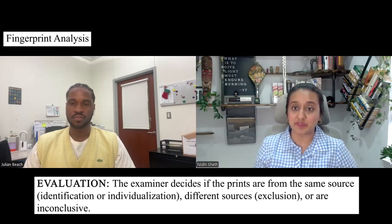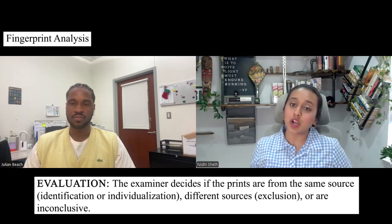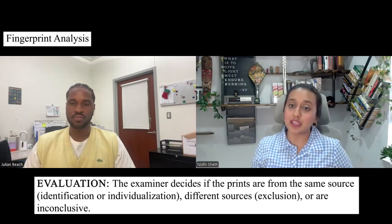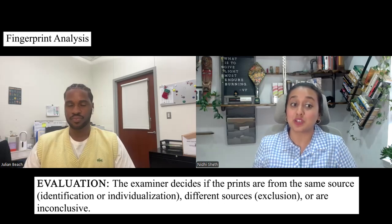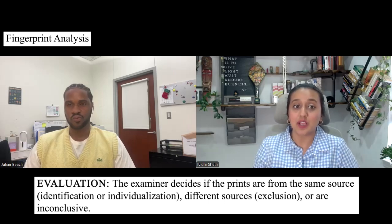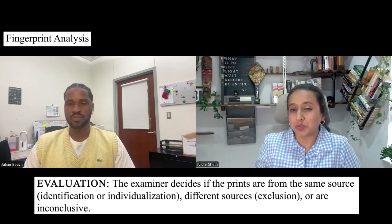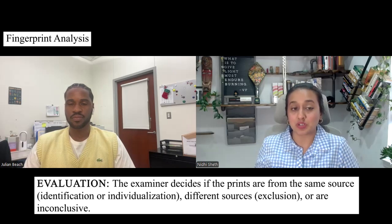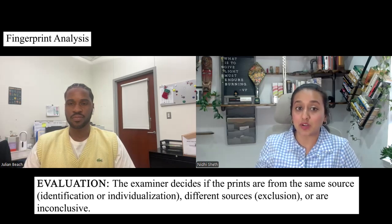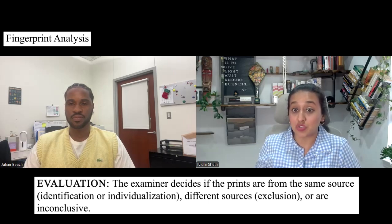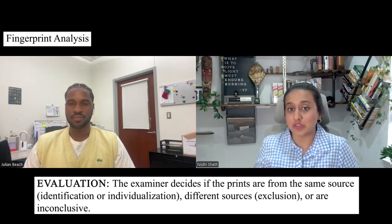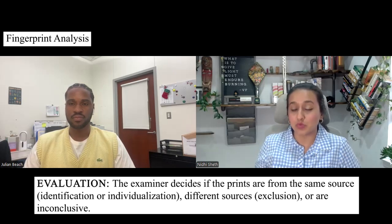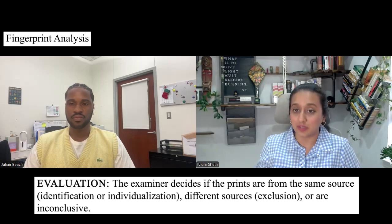It could also be inconclusive because they could not come up with enough details to match — they are not sure if it does match. Lack of comparable areas, insufficient number of corresponding features, or dissimilar features need to be looked at for making a decision of identification, exclusion, or inconclusive.